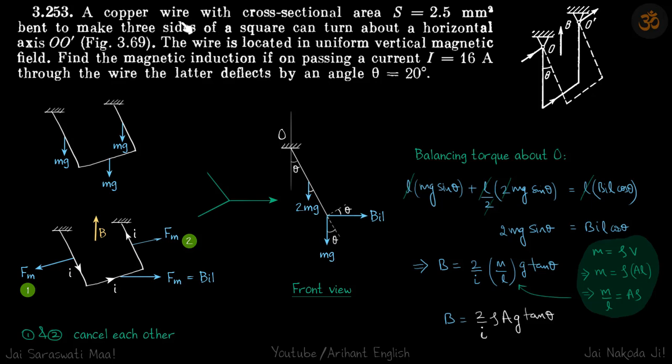A copper wire with cross-sectional area S is bent to make three sides of a square. This wire is located in a uniform vertical magnetic field pointing upwards.